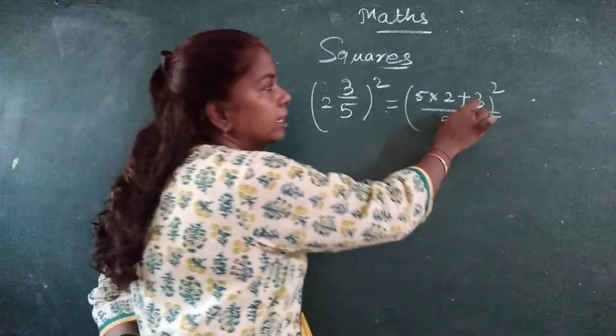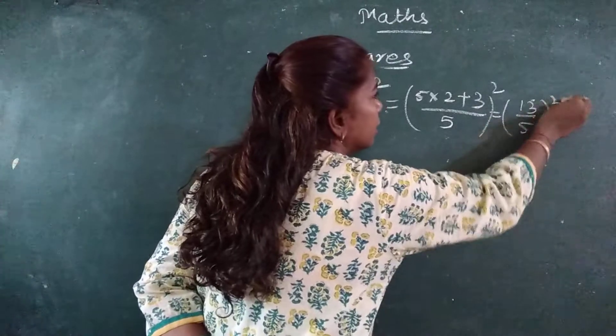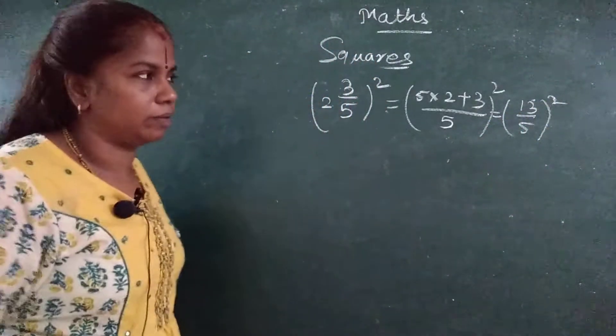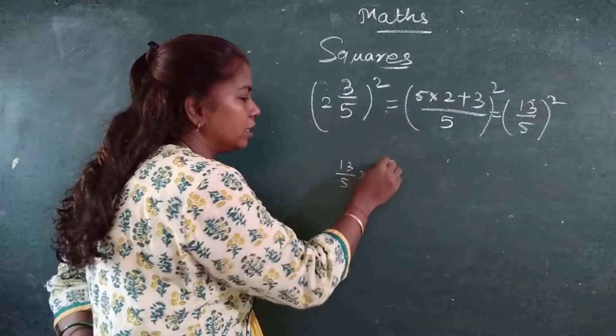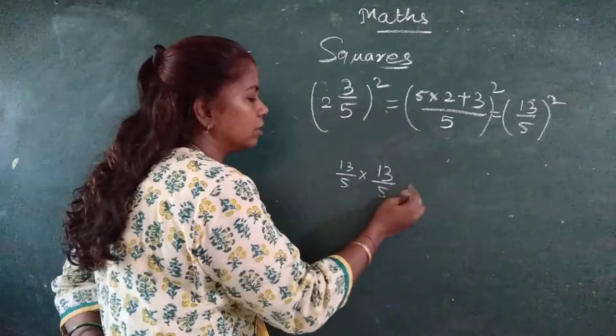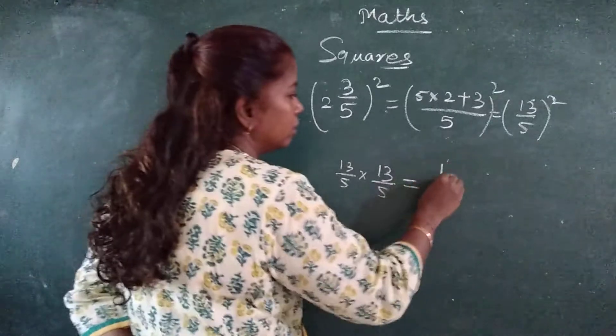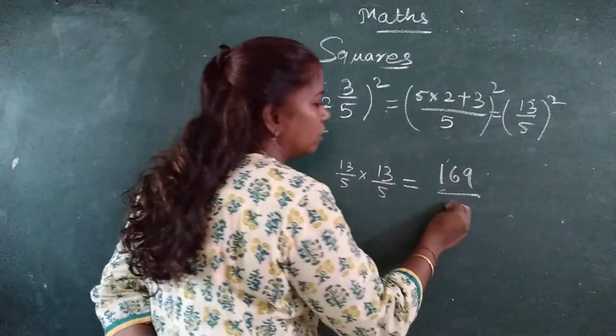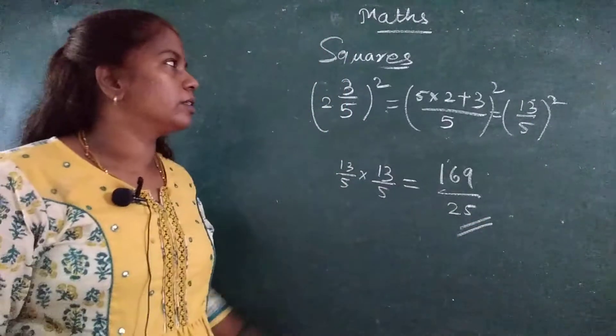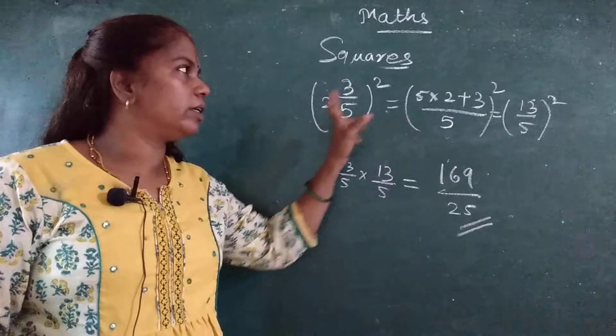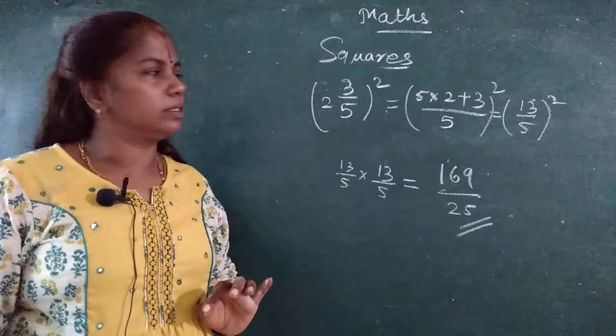5 2's are 10. 10 and 3 is 13. 5 2's are 10, 10 plus 3 is 13. So what? 13 upon 5 into 13 upon 5. 13 13's are how much? 169. 5 5's are how much? 25. Got it? Squaring. First I have converted into mixed number, and then I multiply.